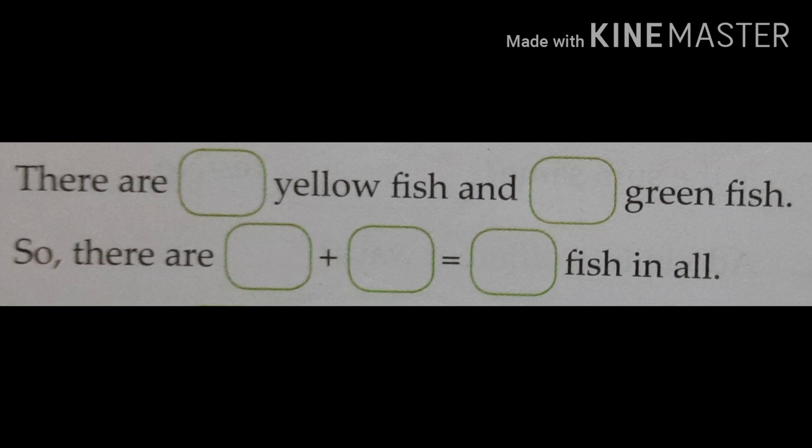Number 2. You see yellow fish and green fish. Count how many yellow fish and how many green fish. Then write the numbers and add it and write the total number of fish.